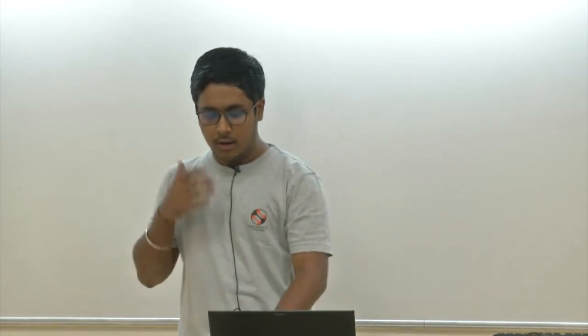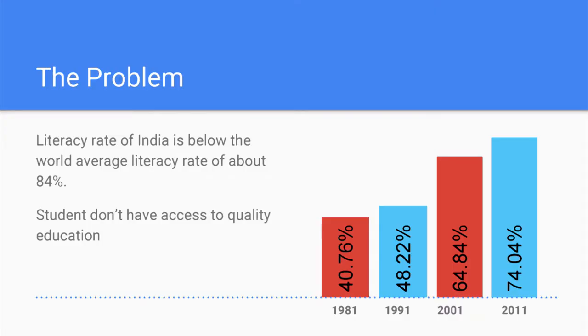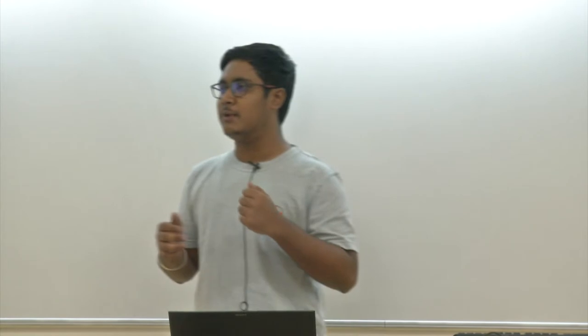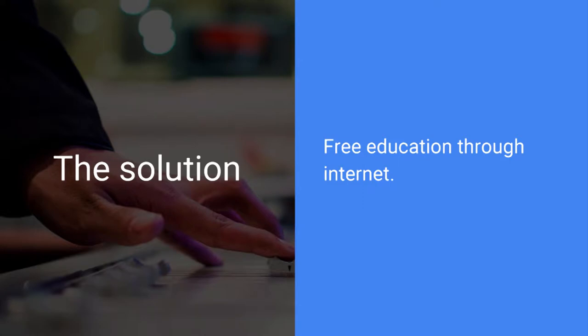Behind this mission there has to be some problem, and the problem is literacy. Right from independence we have done a lot for literacy in our country, but it is still not great. We are at 74 percent, but the world average is 84 percent. So we need something more rapid that can reach larger numbers of people more quickly. The solution is through the internet and free open source — and that is what the School Resource System is about.